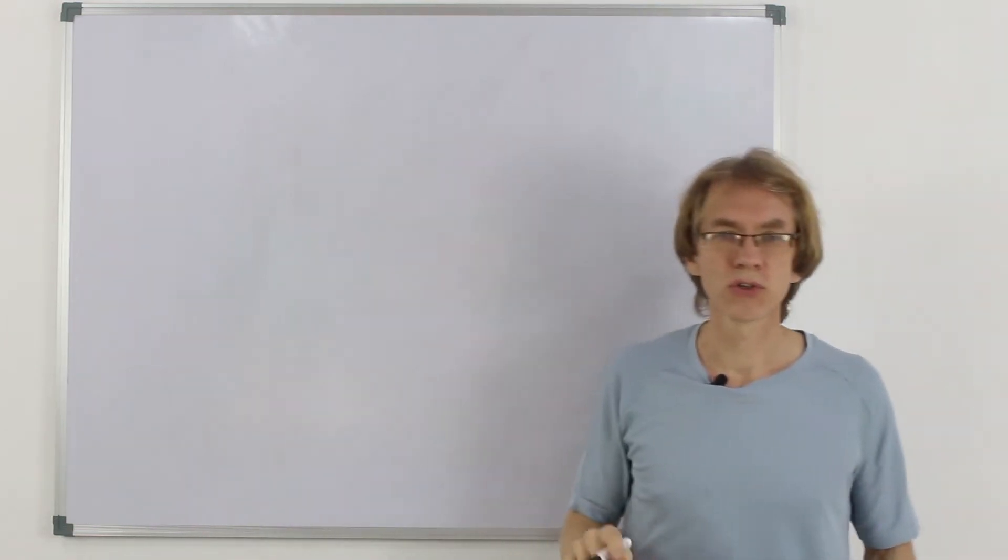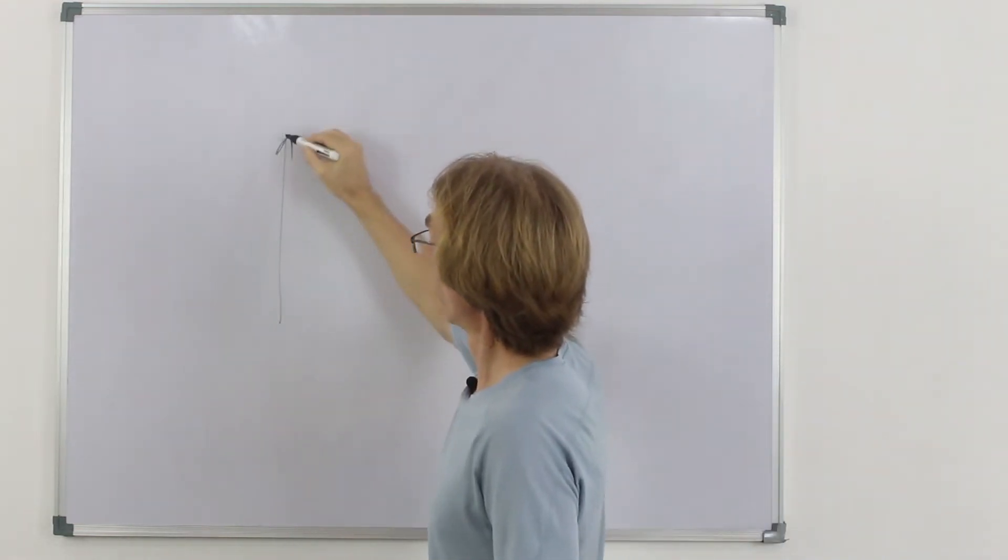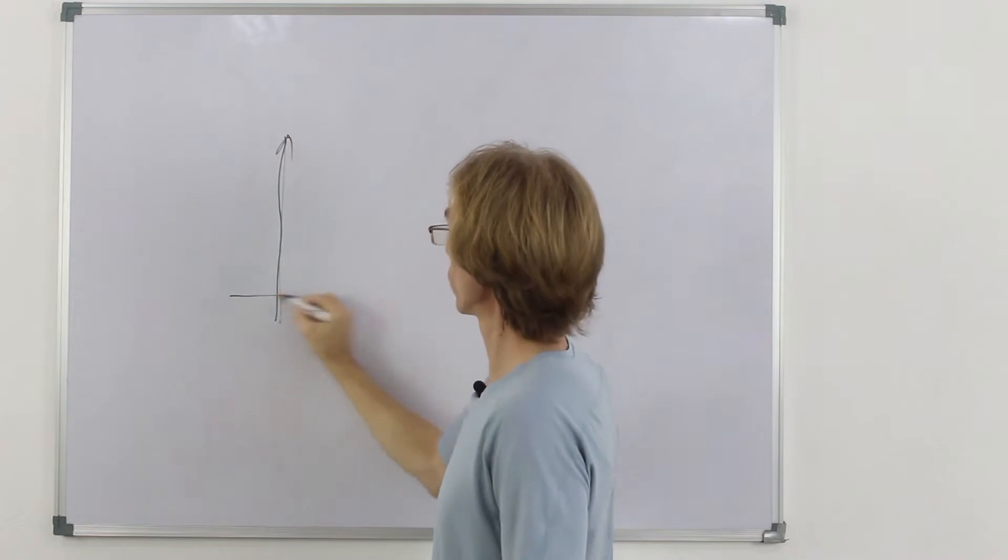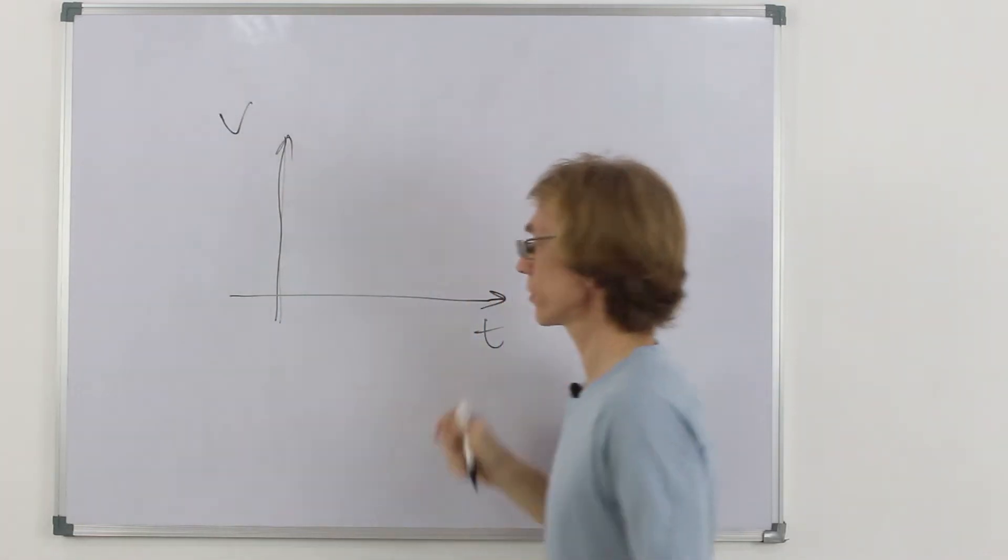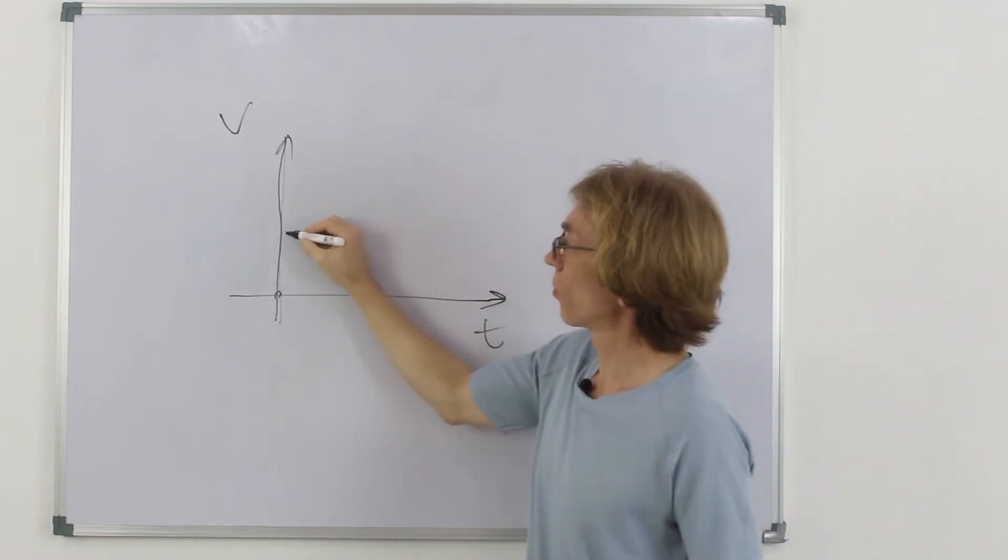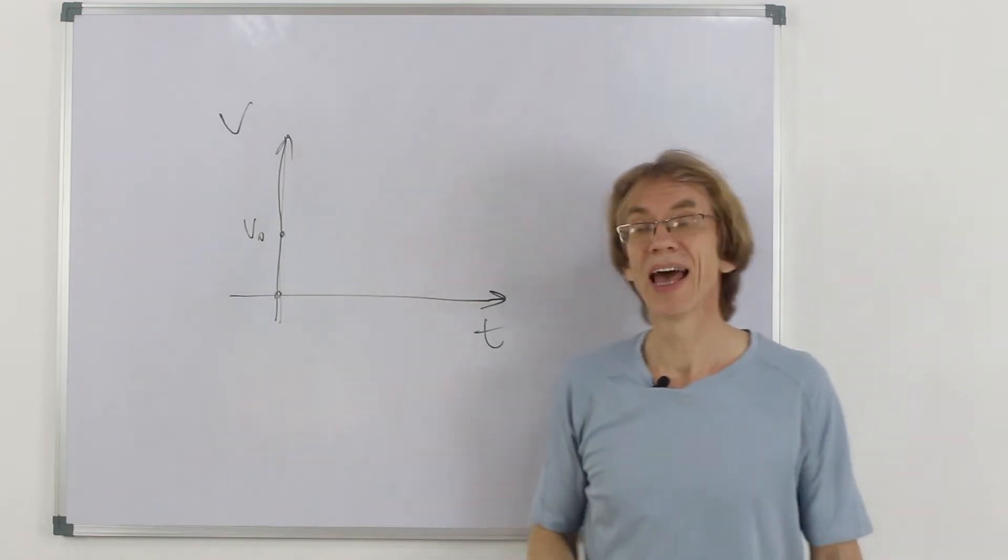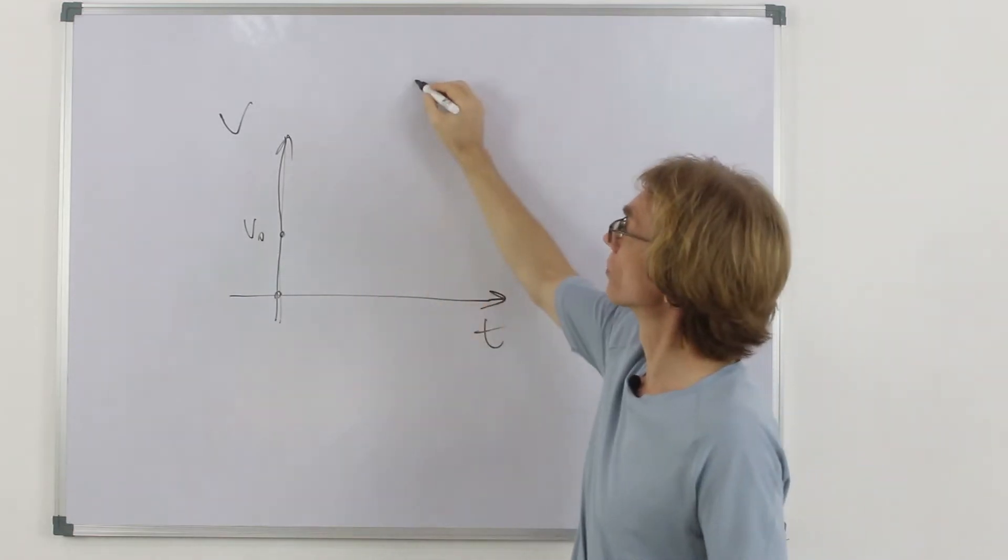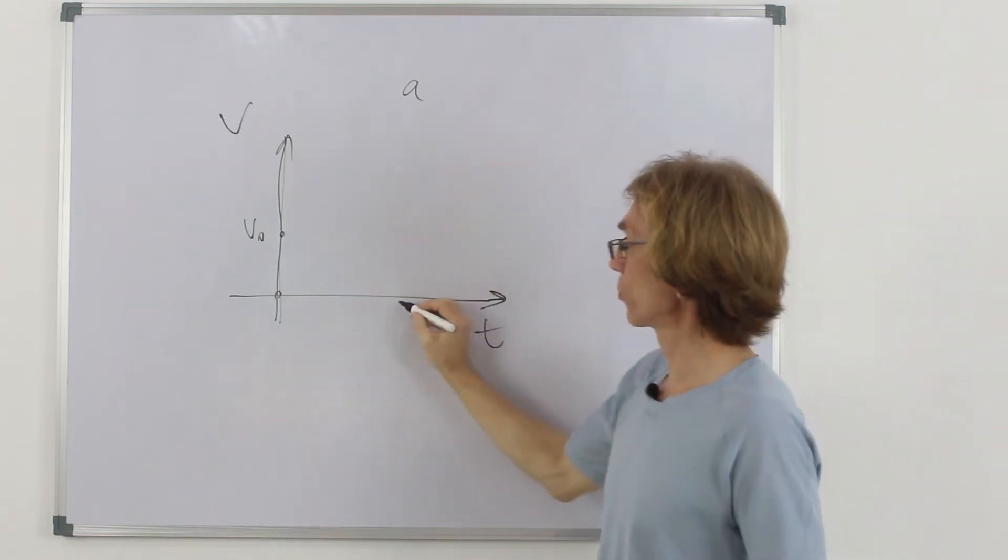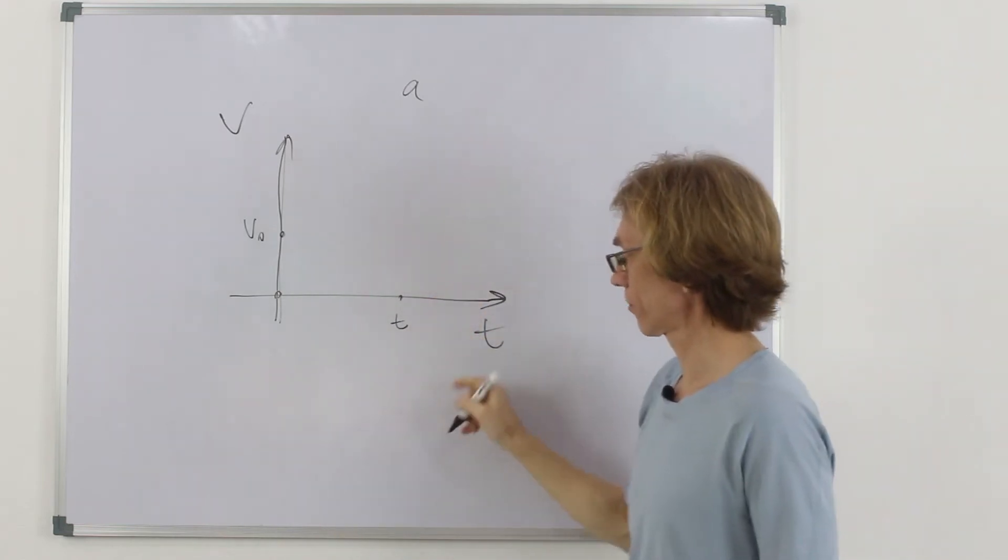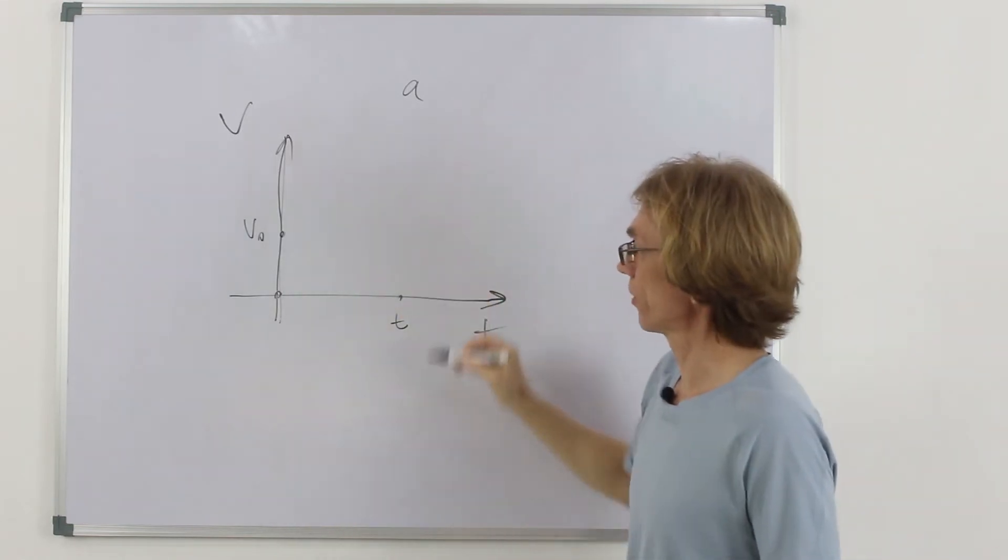Let's try to get this formula geometrically from the graph, how velocity depends on time. Here is velocity, here is time. We had some initial velocity v0. And then the body moves with acceleration a during time t. There is t here. So, it started from here.